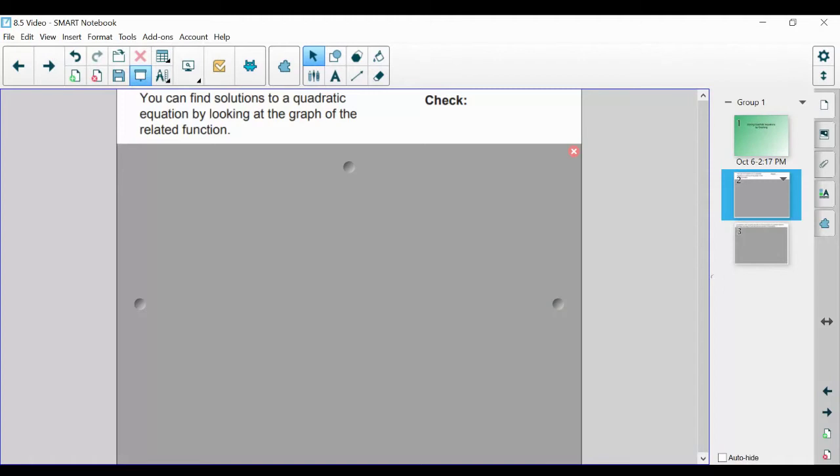You can find solutions to a quadratic equation by looking at the graph of the related function. We want to find the solutions of x² + x - 6 = 0. We can't solve it like we've done previously with linear equations, so one of the ways we can solve for x here is by graphing.